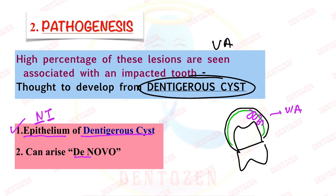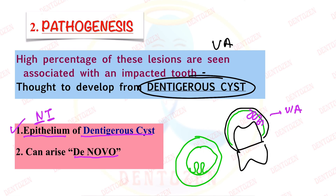The second pathogenesis is that it can arise de novo — from the beginning it forms like a cyst with a lumen and wall, but the epithelial lining is tumor-like. So that is the second pathogenesis: it arises de novo.